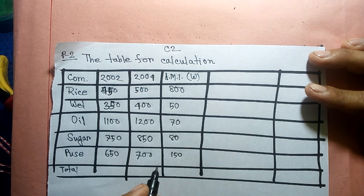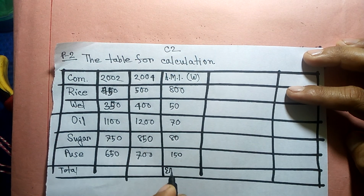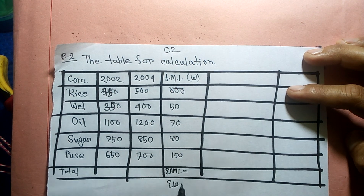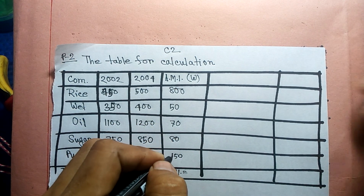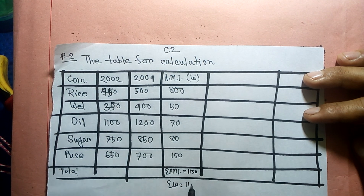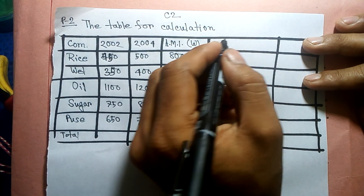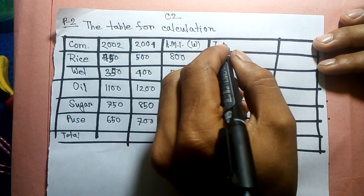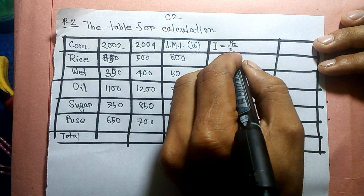The cost of living index formula uses the summation of average monthly income. The formula is: summation of W times I, divided by summation of W, where W is the weight and I is the price index for each item.